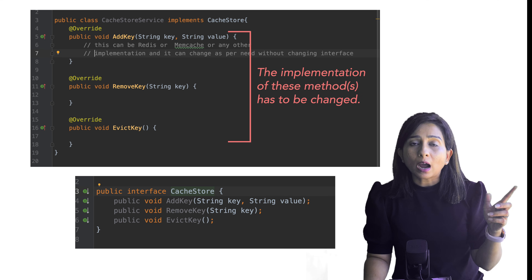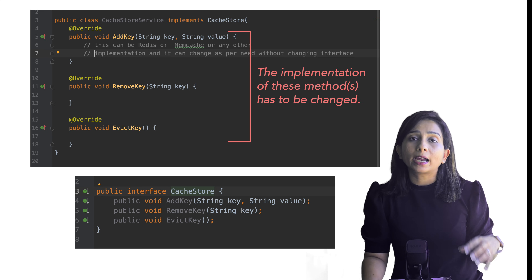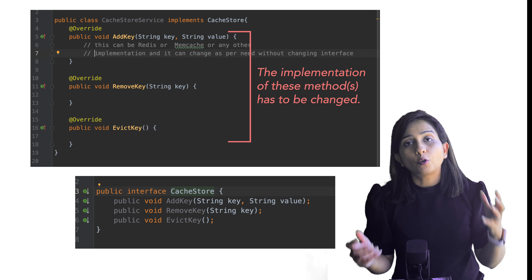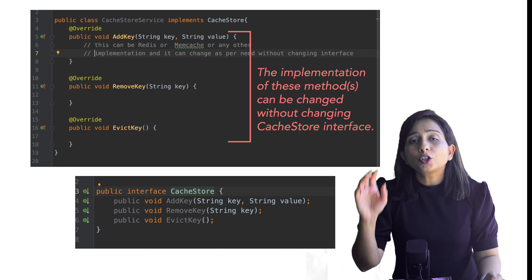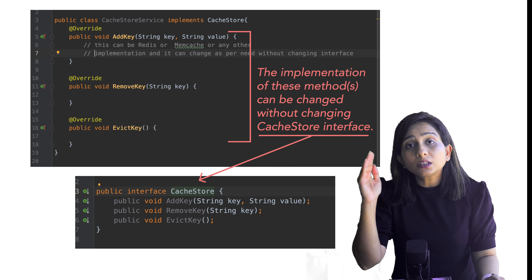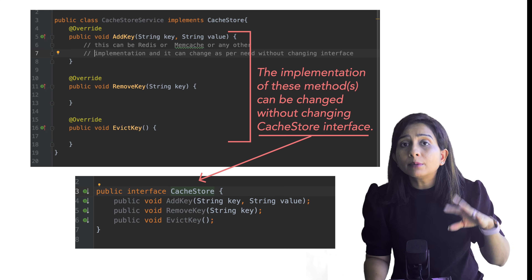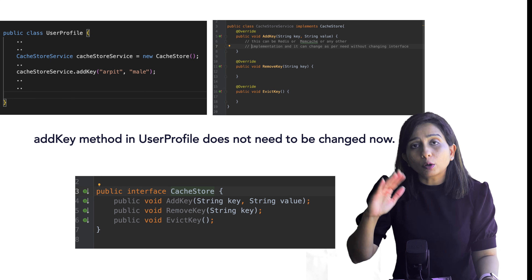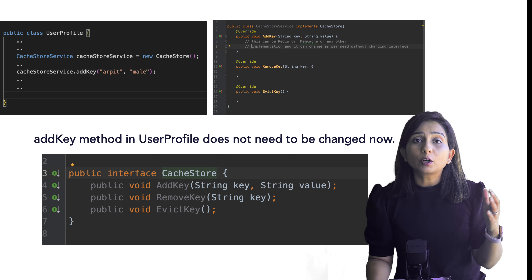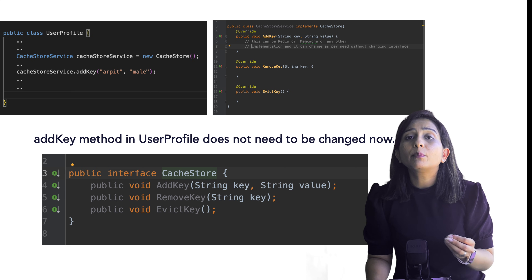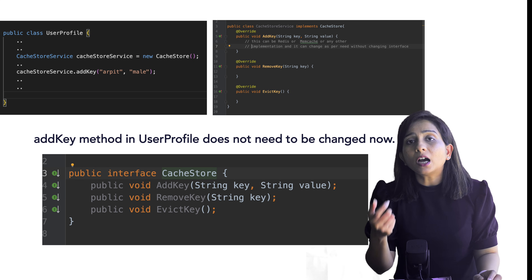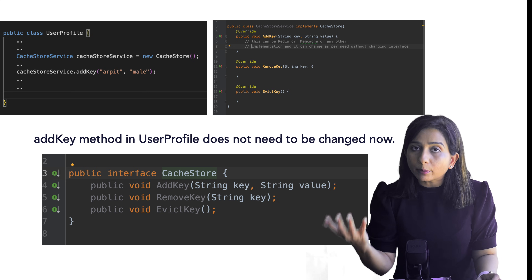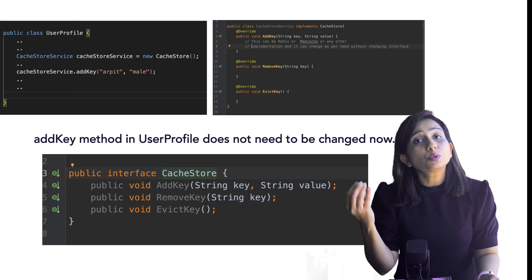Instead, if we use a cache interface that exposes just three functions — add, delete, and evict — with defined parameters, and the actual cache class implements those functions internally as add key, delete key, and evict key, the benefit becomes clear. If tomorrow I replace the caching technology — say, switching from Redis to Memcache or to some third caching solution — the cache interface can still expose the same basic functions, and only the internal implementation changes. The outer level modules have no dependency on those implementation details; that dependency is removed, or inverted, by the introduction of the interface.